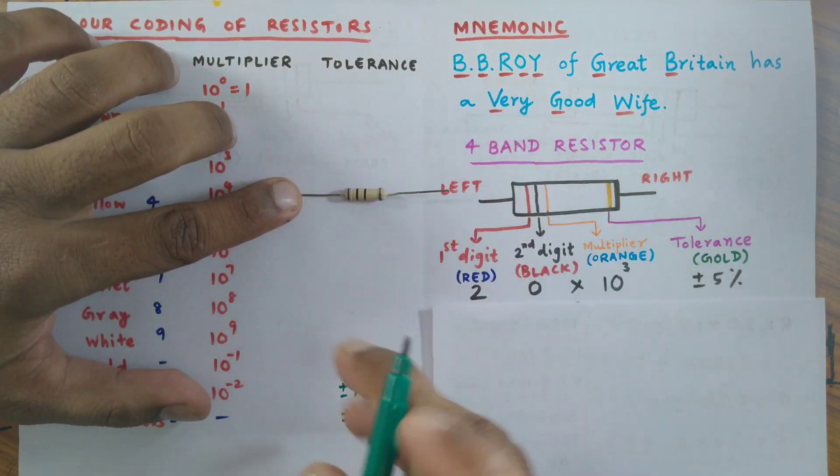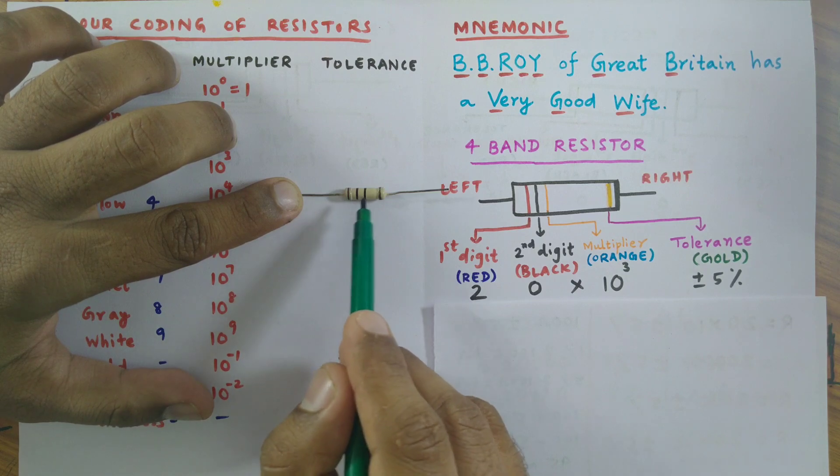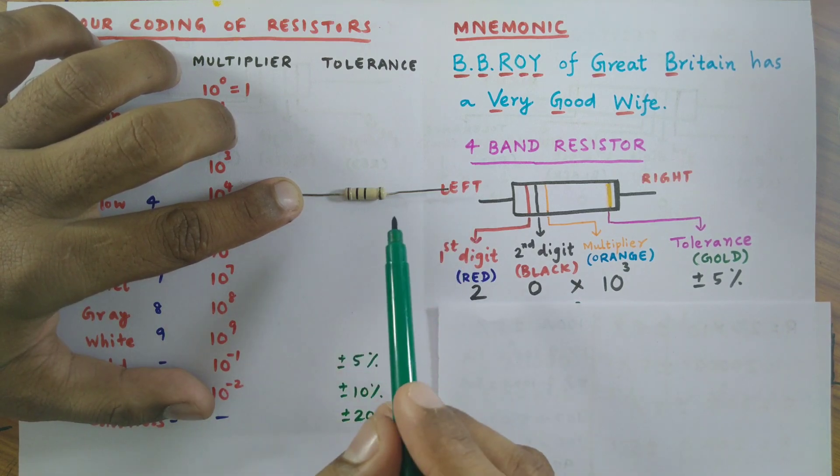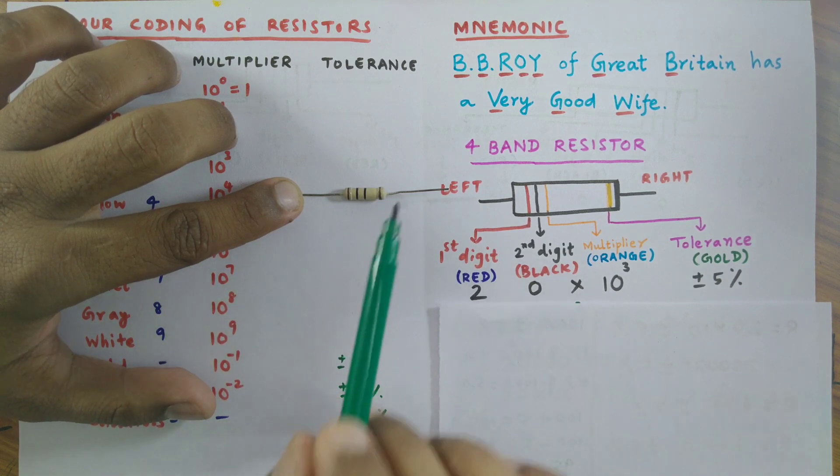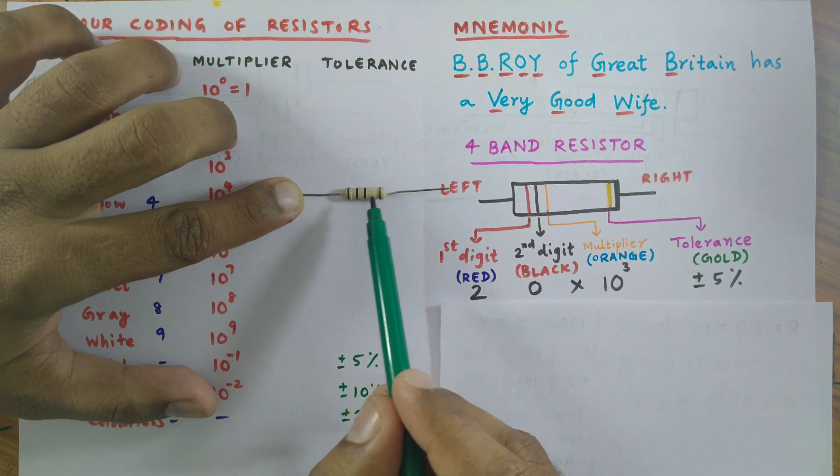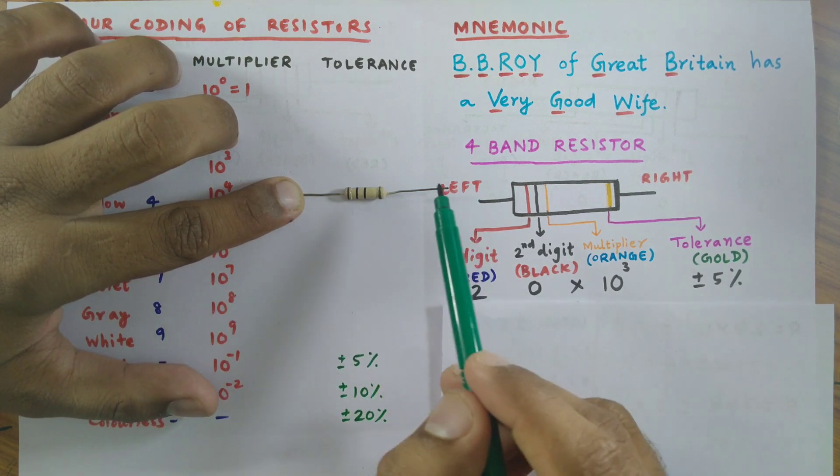This is a carbon resistor. It has four rings present here which provide its value. While reading the value of a carbon resistor, always remember the ring which is far away from the remaining rings should be held towards the right side.